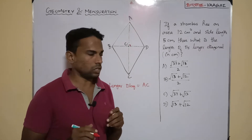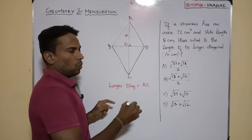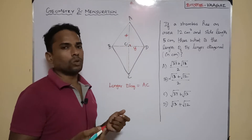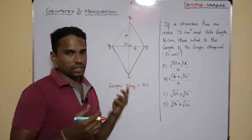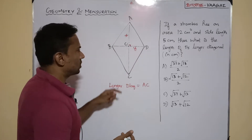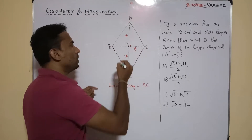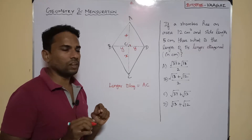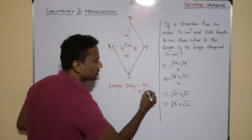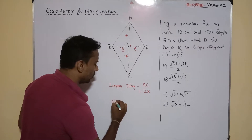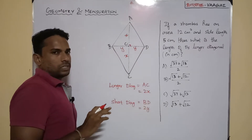Let me introduce some notation. Let AO = x and OD = y. We know the property of the rhombus: when O is the center point where the two diagonals meet, it bisects both diagonals. So if OA = x, then OC = x as well, and if OD = y, then OB = y. Therefore, the longer diagonal AC = x + x = 2x, and the shorter diagonal BD = y + y = 2y.